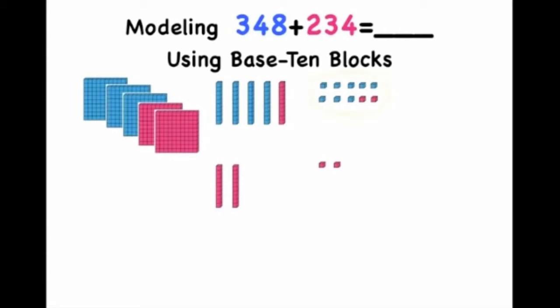We're going to trade ten ones and regroup them into one ten. So after we have traded ten ones for one ten, this leaves us with five hundreds, eight tens, and two ones. So the sum of our equation, 348 plus 234, is 582.